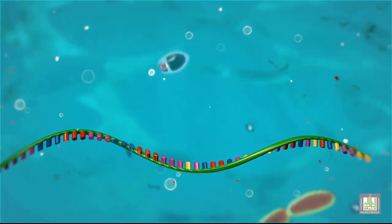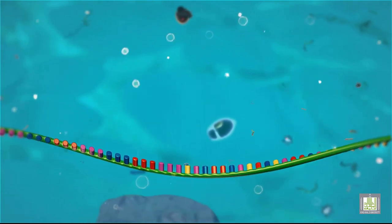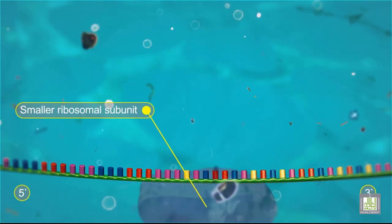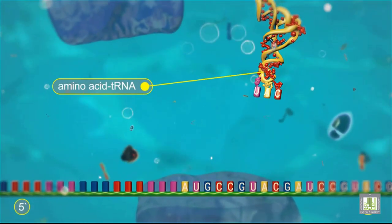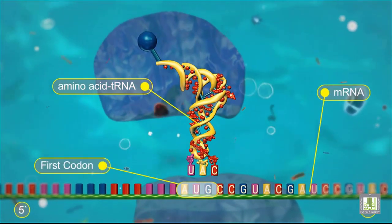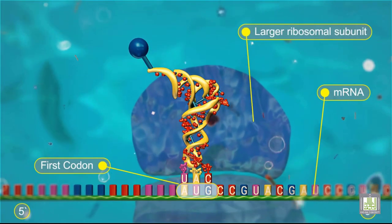Translation is initiated by formation of an initiation complex, consisting of the smaller ribosomal subunit, the first amino acid, tRNA, and messenger RNA. The larger ribosomal subunit then joins the complex.